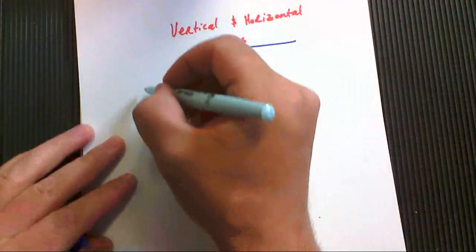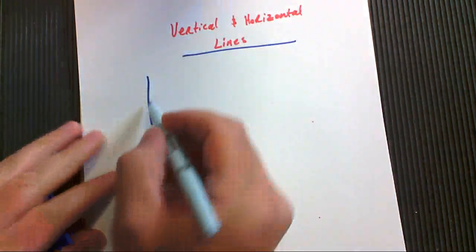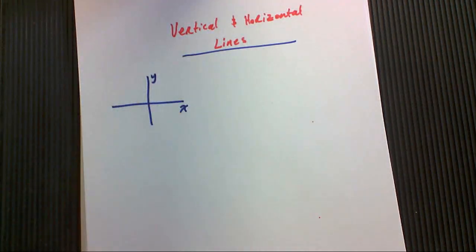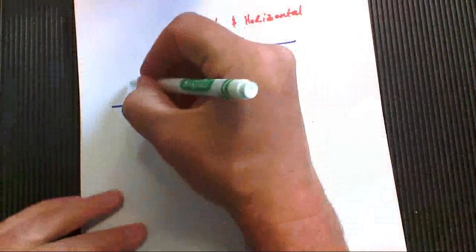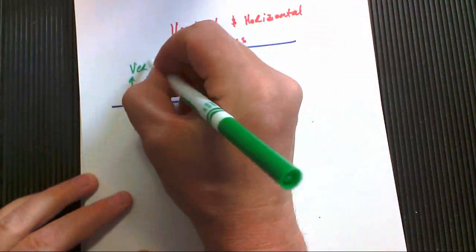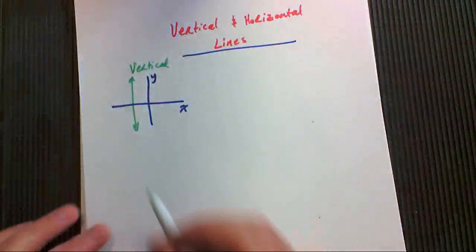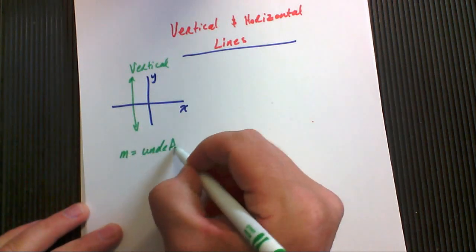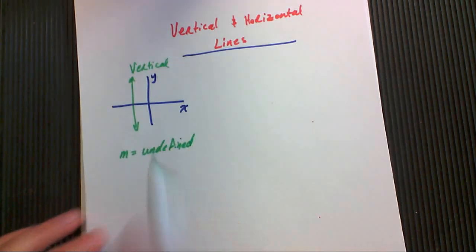First of all, if you have a graph with your y-axis and your x-axis, a vertical line, as always, is just like this. It will have a slope that is undefined. We'll see why that is in just a moment.